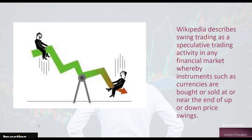There is some confusion out there, so we're going to talk first about what swing trading is, because a lot of people mix it up. Wikipedia describes swing trading as a speculative trading activity in any financial market whereby instruments such as currencies are bought and sold at near the end of an up or a down trend or swing. And this is exactly what swing trading is — it's all about trading on trend lines and tops and bottoms, peaks and valleys.